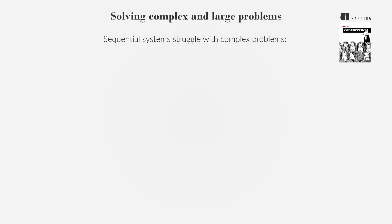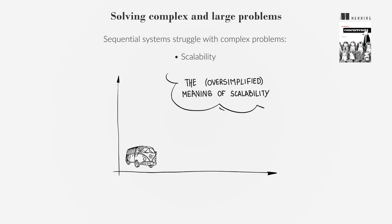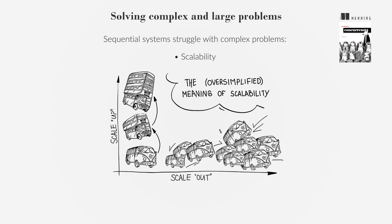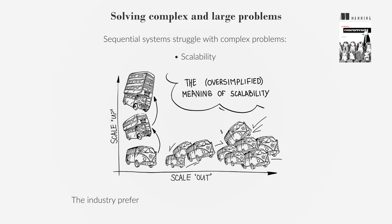Sequential systems struggle with complex problems. The ability to enhance performance by adding resources can be vertical, upgrading existing resources, or horizontal, distributing the load across multiple resources. The industry prefers horizontal scaling, which necessitates concurrency.